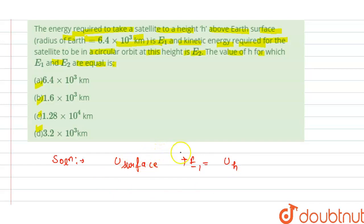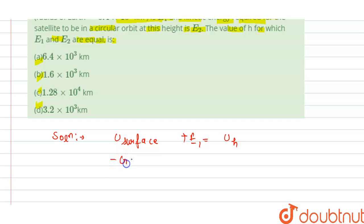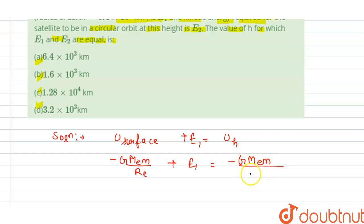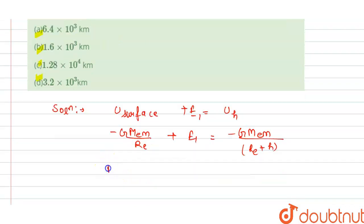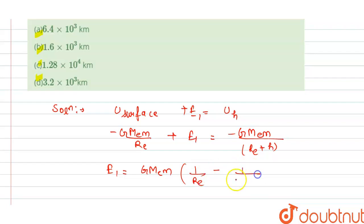So we can write: −GMₑm/R + E1 = −GMₑm/(R + h). From this, E1 equals G times mass of Earth times m, multiplied by 1/R minus 1/(R + h).